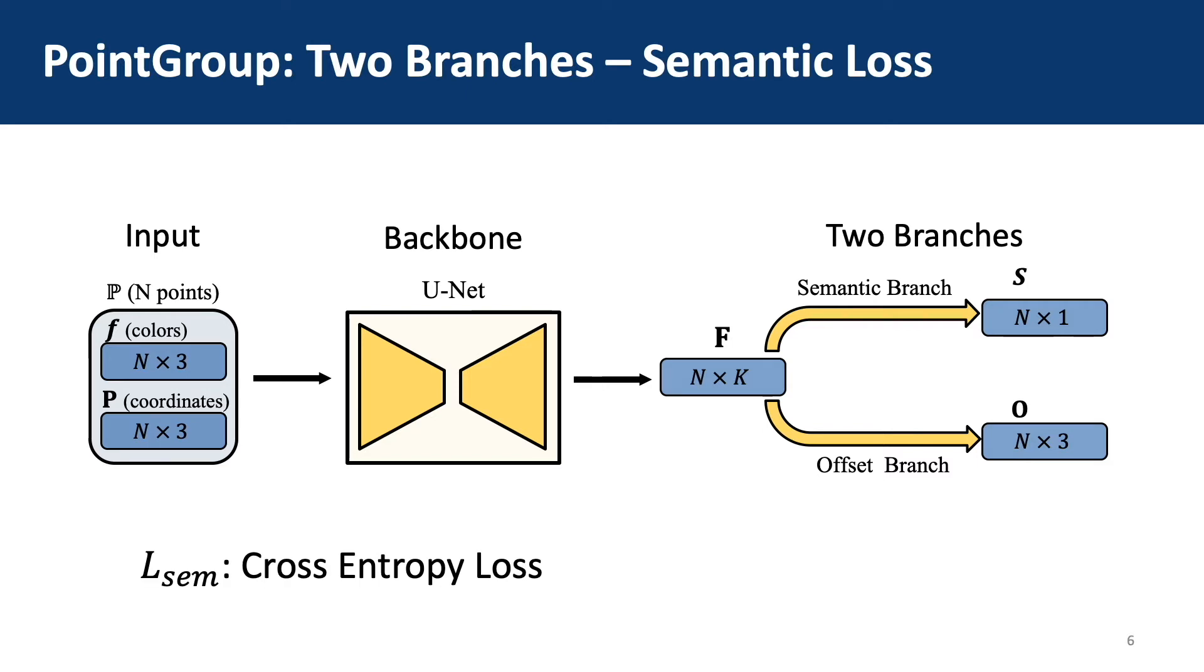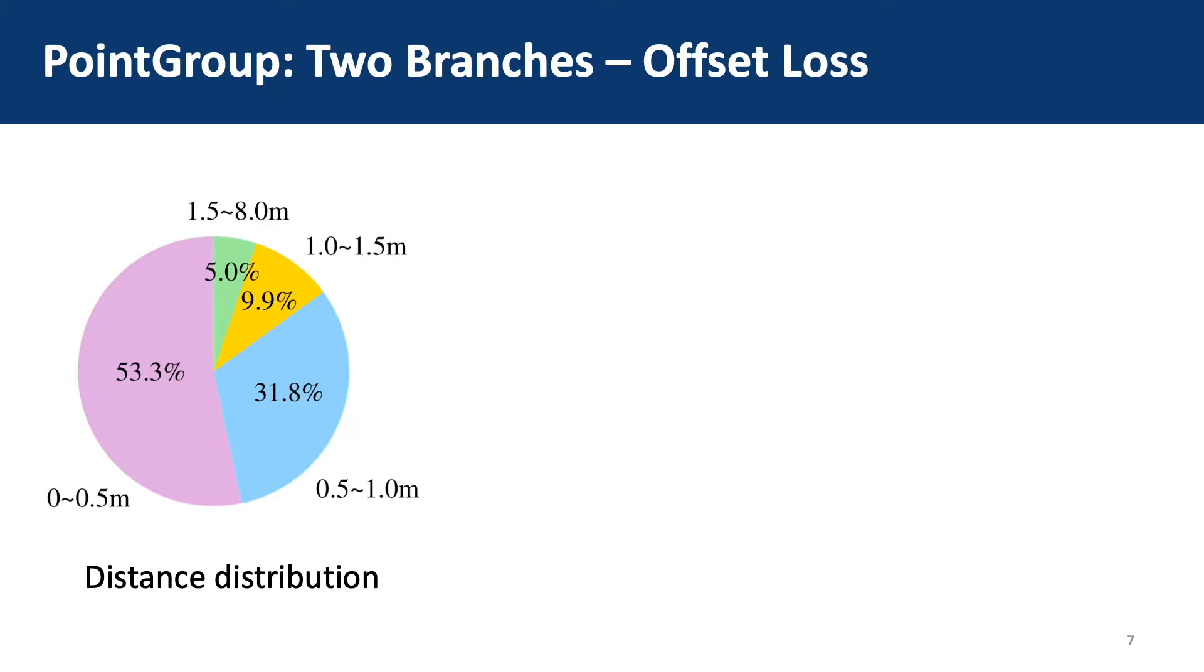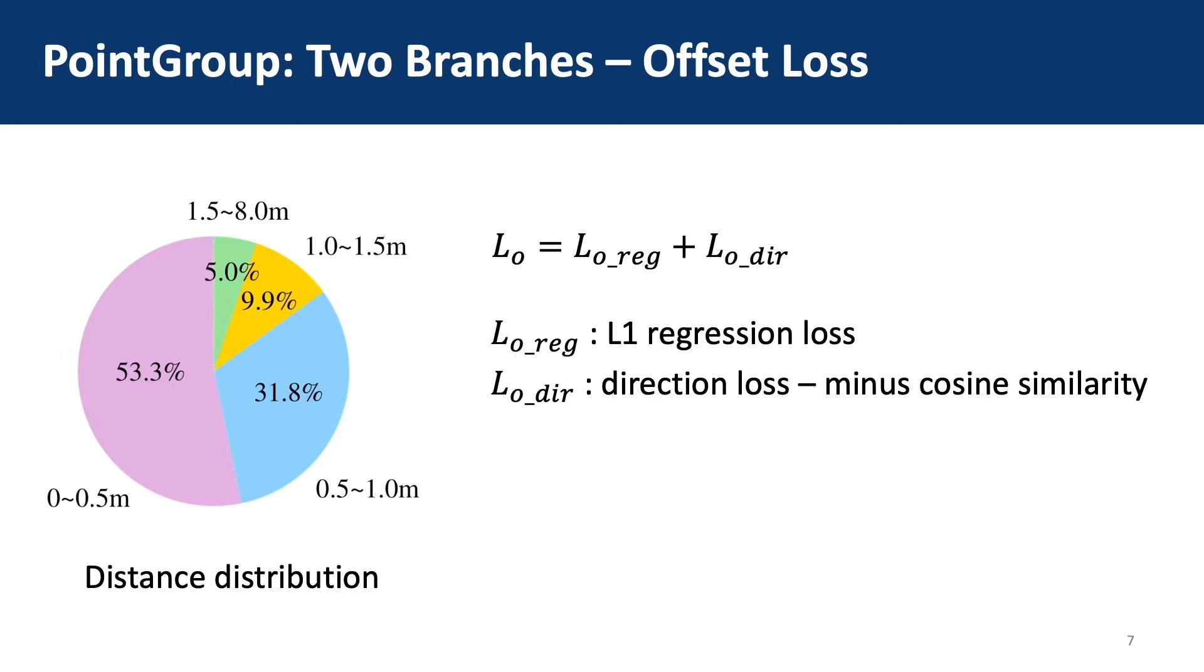We constrain the semantic branch by the cross entropy loss. For the offset loss, we observe that the distances from points to their instance centroid concentrate on small values, so it is hard for the network to regress the offset of boundary points of large objects. Thus, besides the conventional L1 regression loss, we also apply a direction loss which regularizes the direction of the predicted offset. Direction loss makes sure that the offsets move points towards their instance centroid.